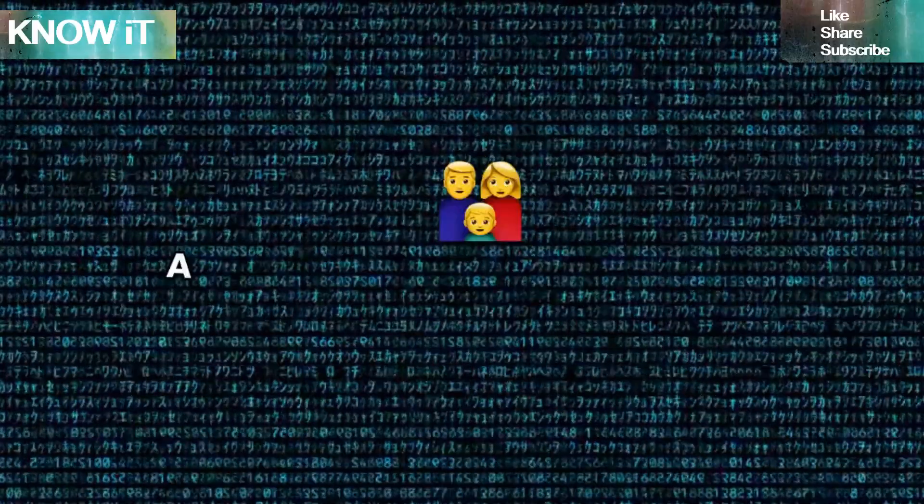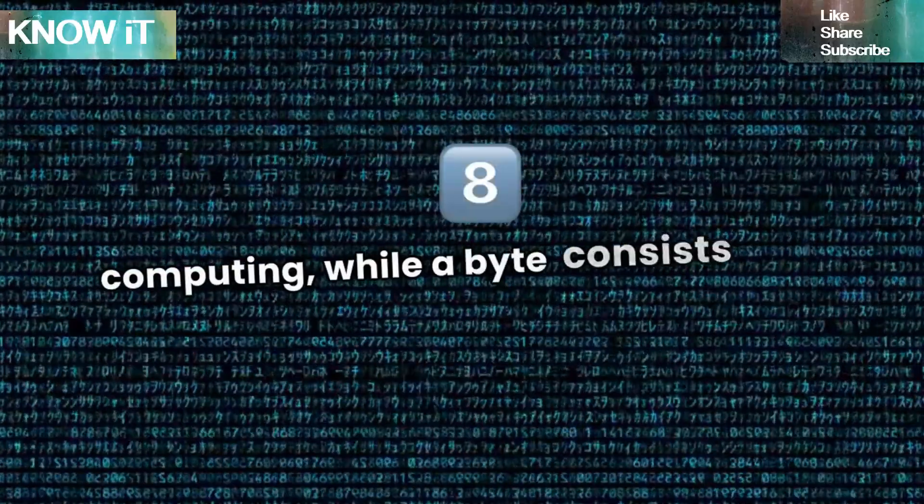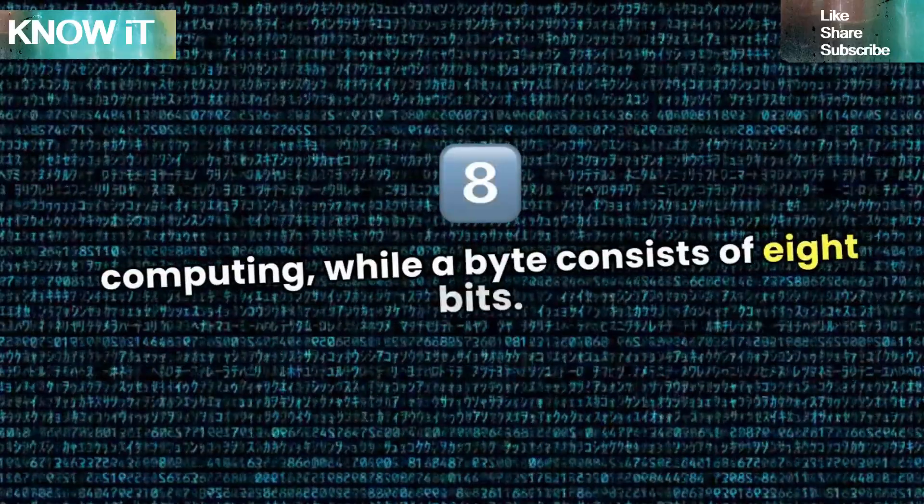A bit is the smallest unit of data in computing, while a byte consists of 8 bits.